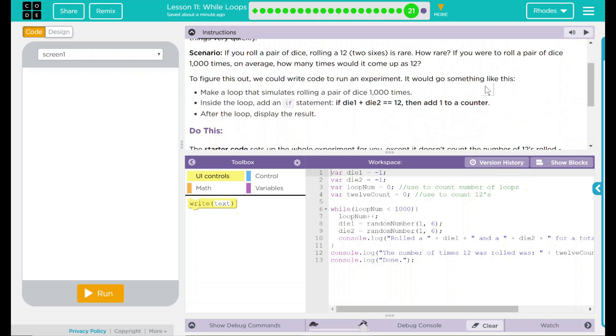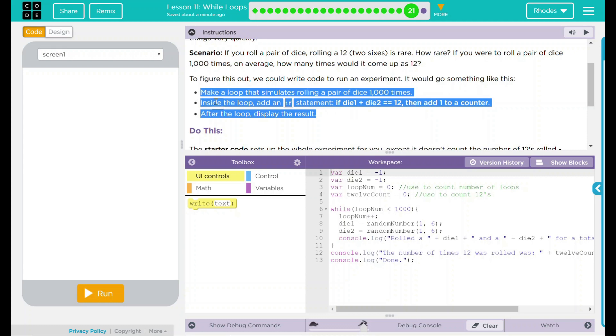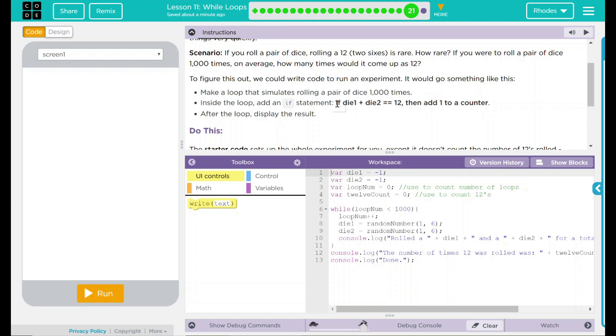Make a loop that simulates rolling a pair of dice a thousand times. Inside the loop, add an if statement, if die one plus die two equals 12, then add one to the counter. After the loop, display the results. I think this is going to be a pretty important part right here, especially this if statement at the end. I think we're going to reference this in a minute.